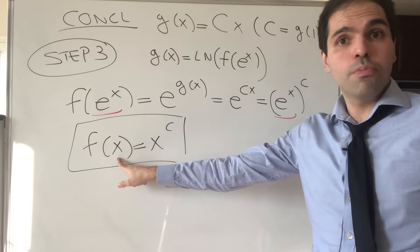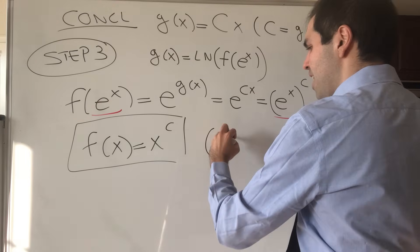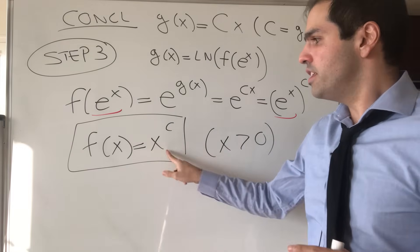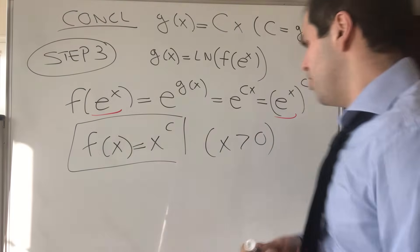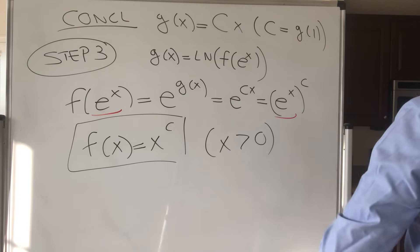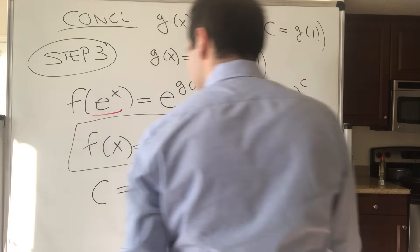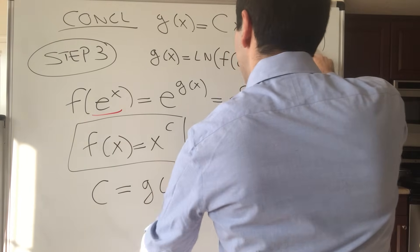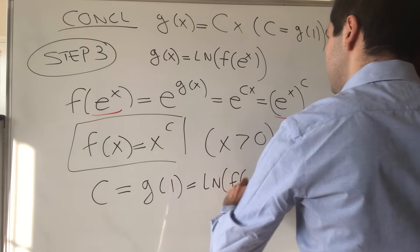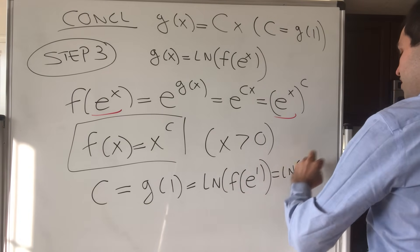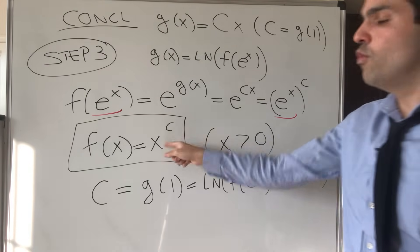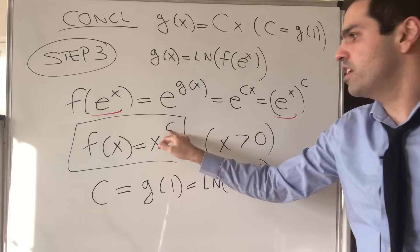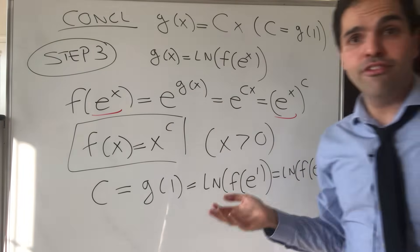That solves the problem for continuous f and positive x. It turns out the only solutions are power functions. And you can calculate c explicitly: c equals g(1), which is ln(f(e)). So the power exponent is just ln of f evaluated at the value e.